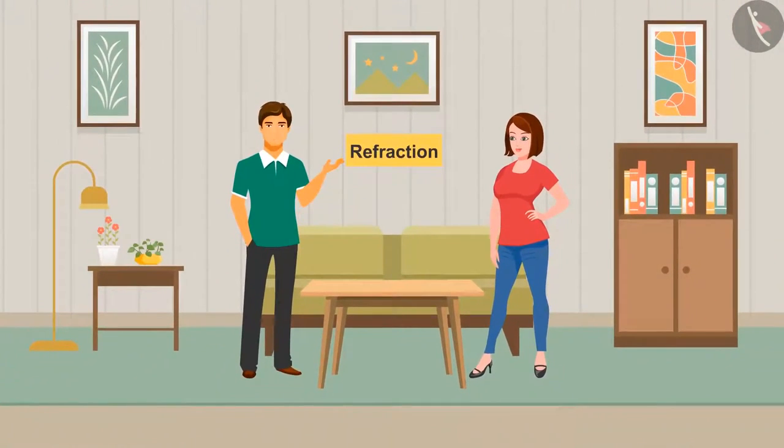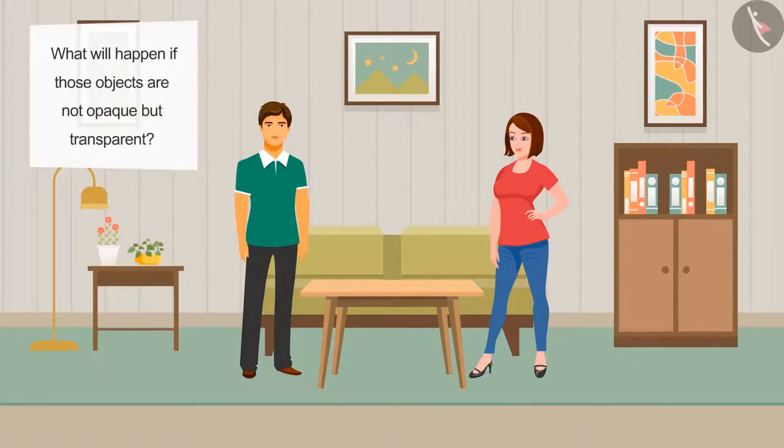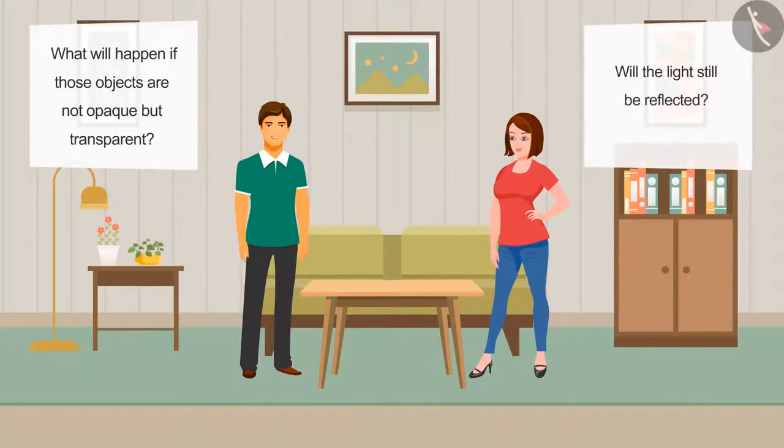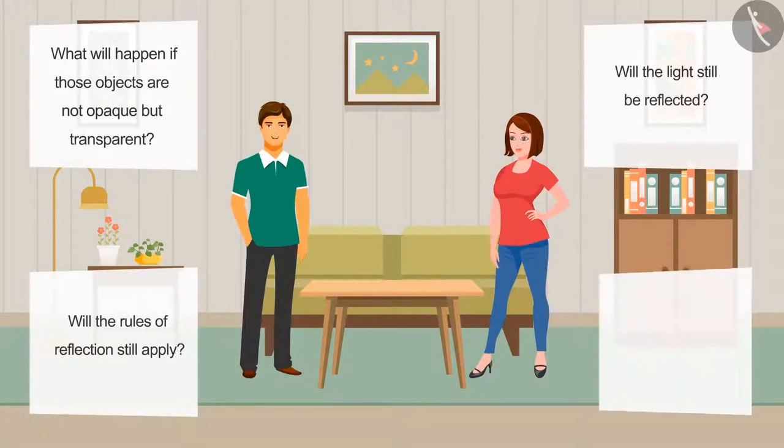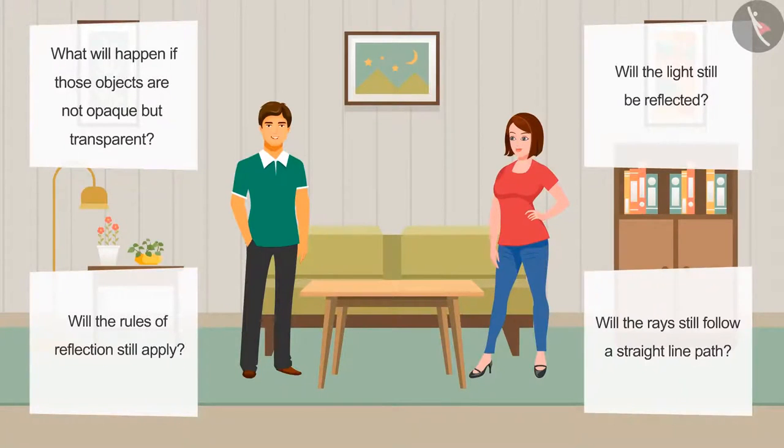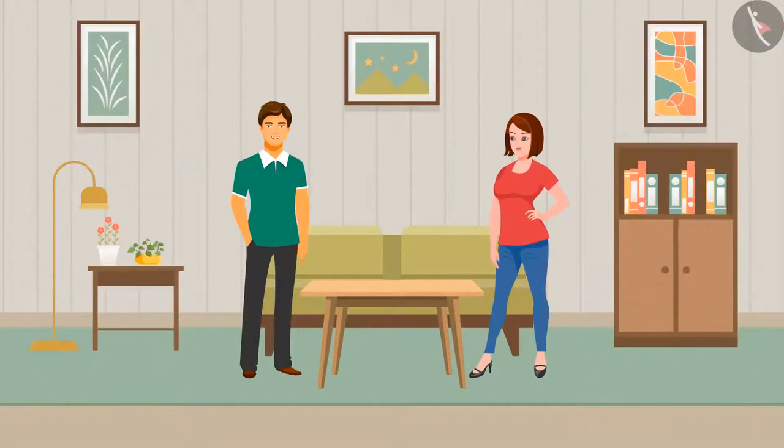Today's topic name is refraction. Till now, what have you learnt Rahul? We have already learnt about light reflection and how the rays of light get reflected by different objects. But Ayesha, there are some questions in my mind. What will happen if those objects are not opaque but transparent? Will the light still be reflected? Will the rules of reflection still apply? Will the rays still follow a straight line path?